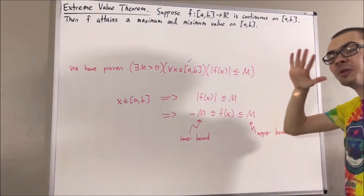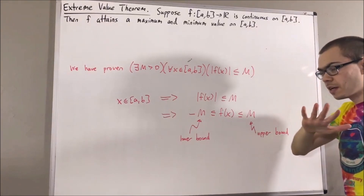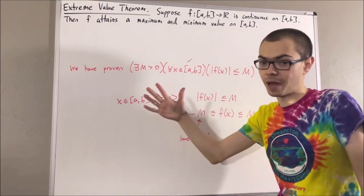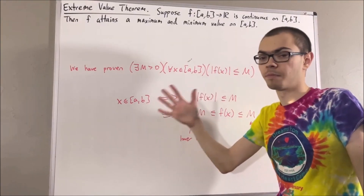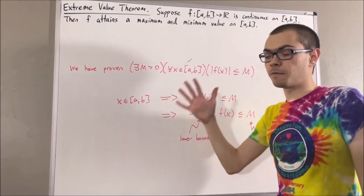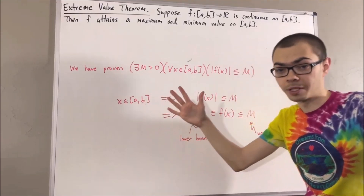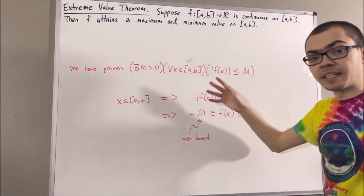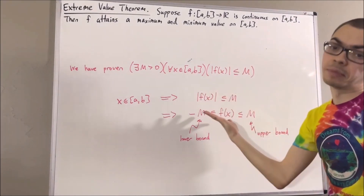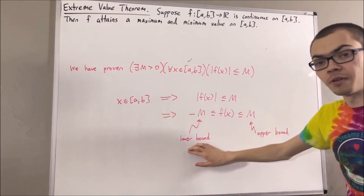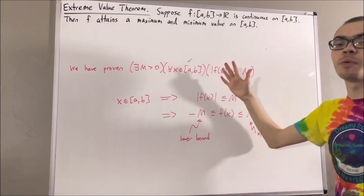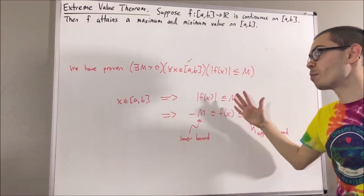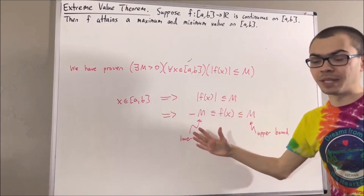Now, from the completeness property of the real numbers, every non-empty set of real numbers that has an upper bound must have a smallest upper bound, also known as a supremum. And every non-empty set of real numbers with a lower bound has a greatest lower bound, also known as an infimum. Since the set of output values of f is non-empty, has an upper bound, and has a lower bound, it has a supremum and an infimum. We let u equal the supremum of f and v equal the infimum of f.